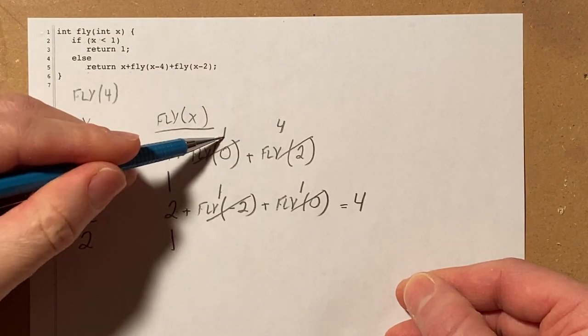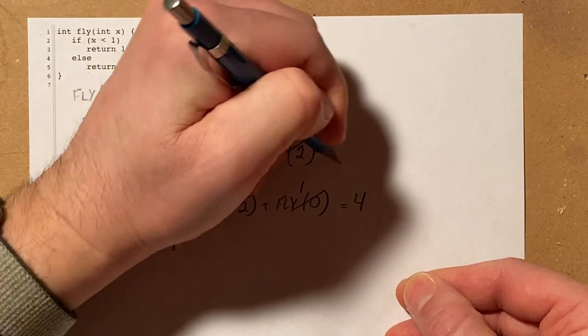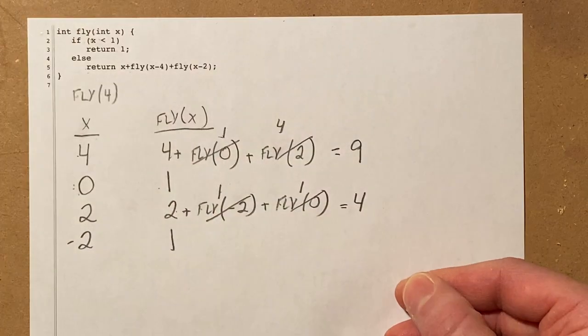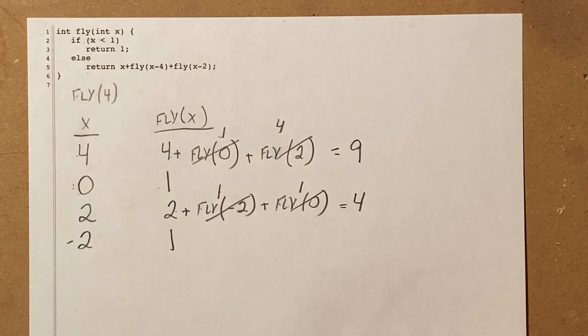And so fly of 4 is 4 plus 1 plus 4 is 9. And that gives us our answer to this recursive one.